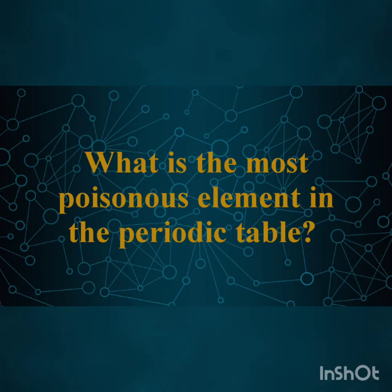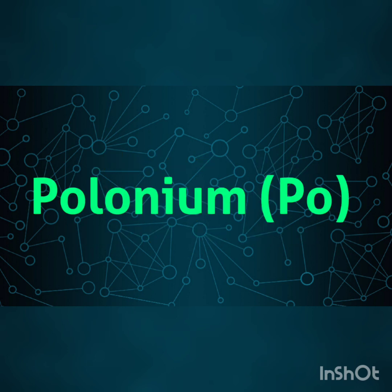Question number 1: What is the most poisonous element in the periodic table? Polonium. A gram of polonium can kill 10 million people. And the second most poisonous element in the periodic table is mercury.